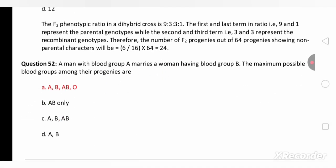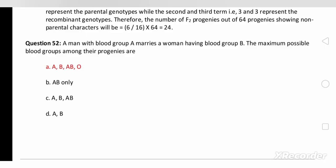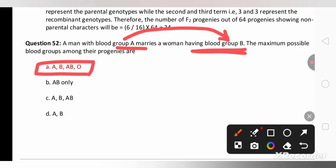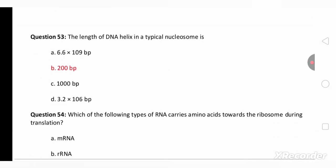In the next question, a man with blood group A marries woman having blood group B. When man with blood group A marries with woman with blood group B, the possible blood group of the progenies will be all the four: A, B, AB and O.